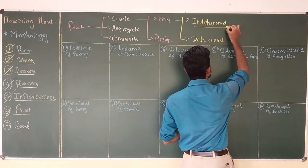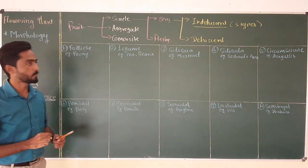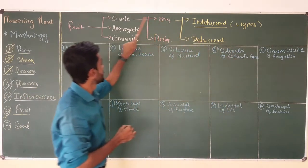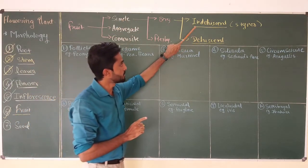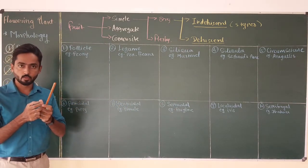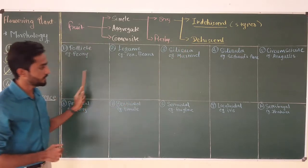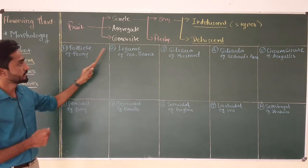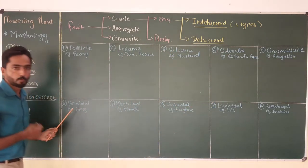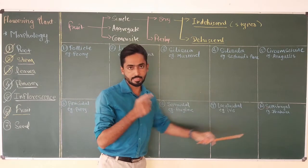In case of dehiscent fruit, the fruit wall gets broken or burst after maturity, which helps in the dispersal of seeds. The dehiscent fruit has ten different types: follicle, legume, siliqua, silicula, circumscissile, poricidal, denticidal, septicidal, loculicidal, and septifragal. In this video I am going to discuss every type in detail.